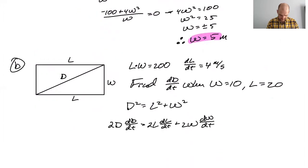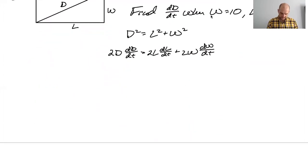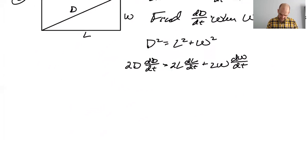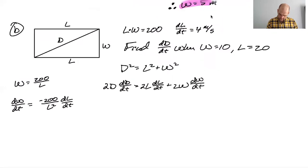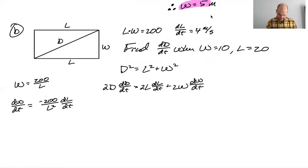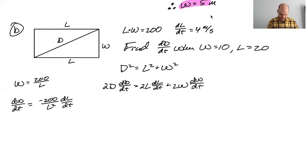W is equal to 200 over L. So dW/dt is negative 200 over L squared times dL/dt. Because I know dL/dt, I know L. So let's just, let's just do it. Let's just find dW/dt.